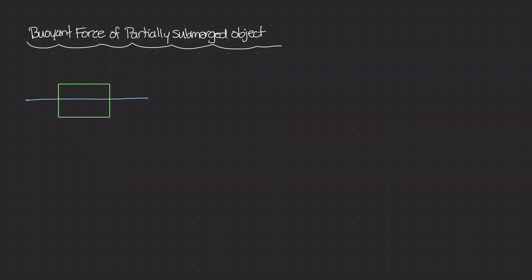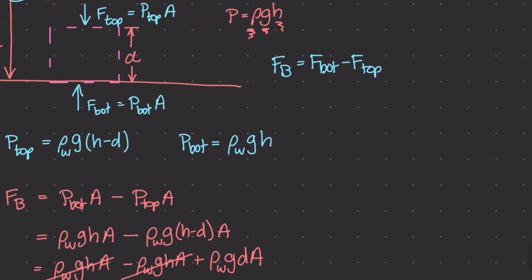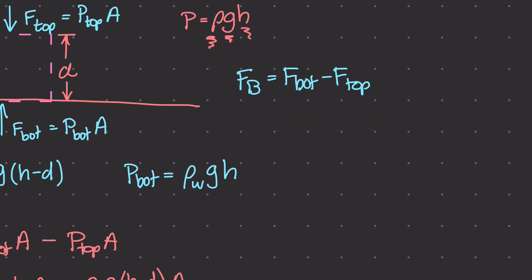In this video we want to look at the buoyant force of a partially submerged object. In the last video we were looking at an object that was fully submerged underwater and we figured out how the buoyant force — which is the mass of the water displaced times gravity, or the weight of the water displaced — is equal to the forces at the bottom of the object minus the force at the top of the object. These two forces are induced by the pressure caused by the liquid above and below the object.